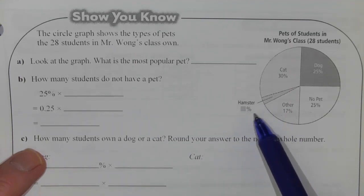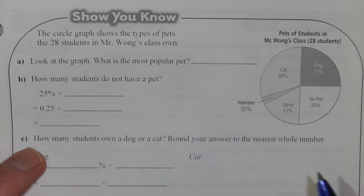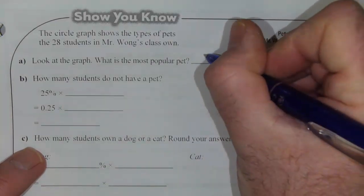And then we've got an unknown tiny piece here for hamsters. So the largest piece is for cats at 30%.